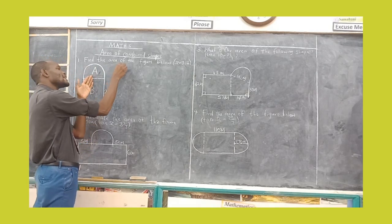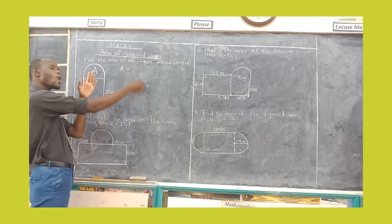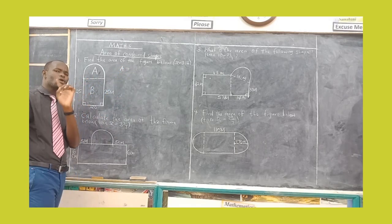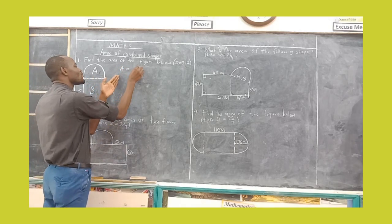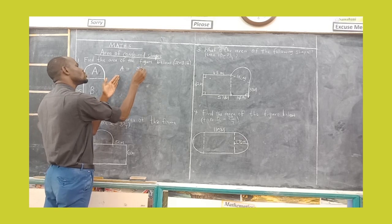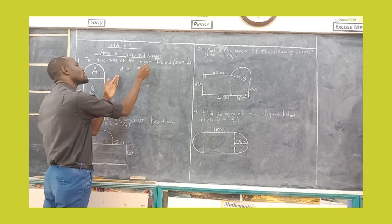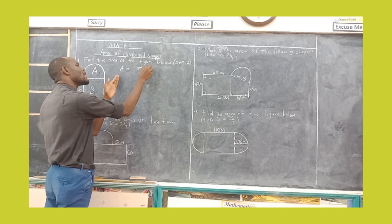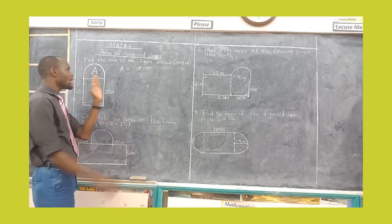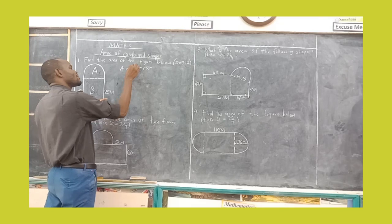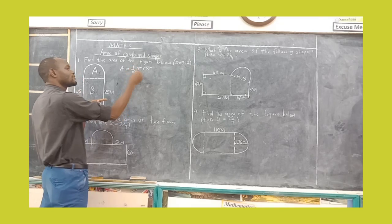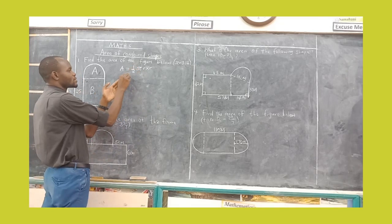How do you get the area of a circle? The formula is very important. The area of a circle is pi r squared, meaning pi times r times r. But this one is not a circle, it is a semi-circle, so it is half of that. Let us substitute.